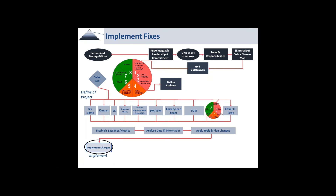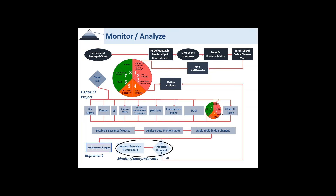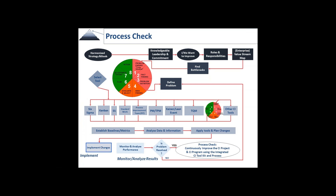Let's do what it takes to get them implemented. Then we monitor and analyze — did the problem get solved? If the answer is no, watch that arrow all the way to the top where we define the problem again. Maybe we left something out. If the answer is yes, we move on, implement, and do a process check — how did it go? Could we have done it better? We continue to improve what we did over and over again.